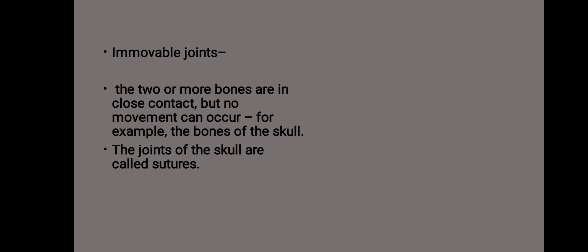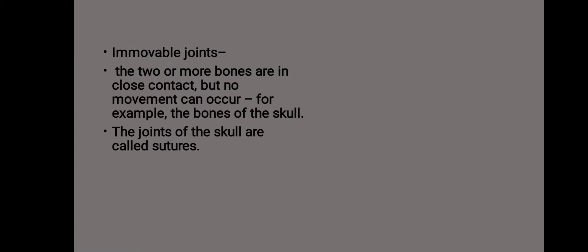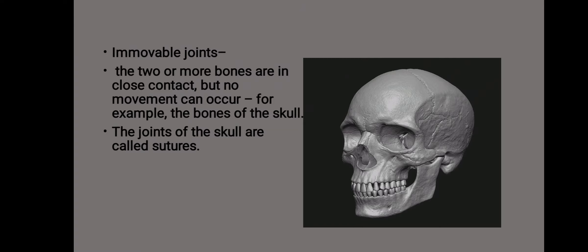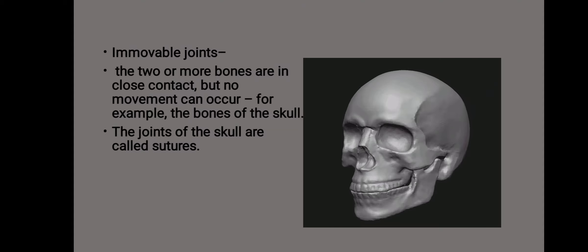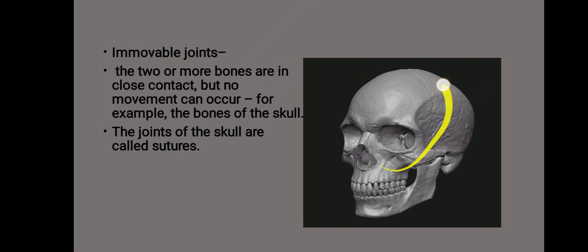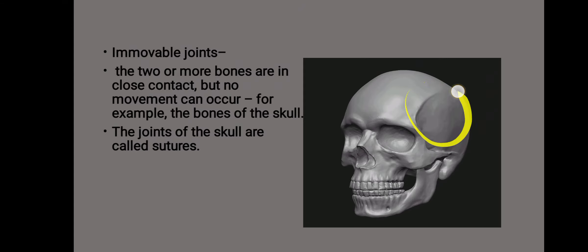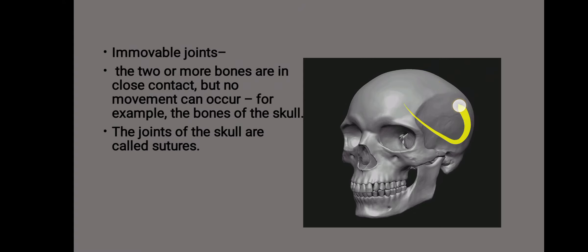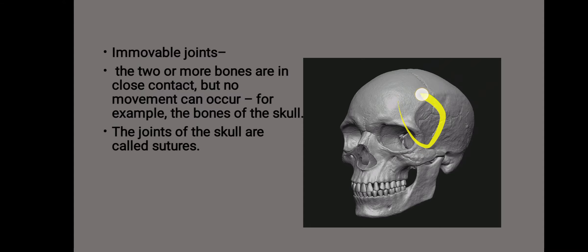Immovable joints are those where two or more bones are in close contact but no movement can occur. For example, the bones of the skull. The joints of the skull are called sutures, as you can see in the skull diagram here.